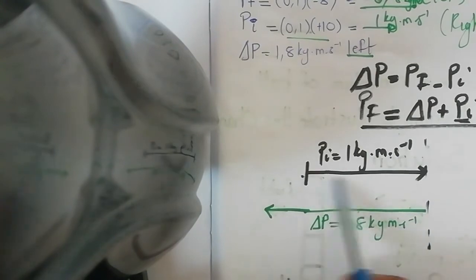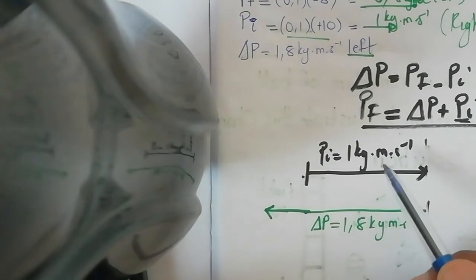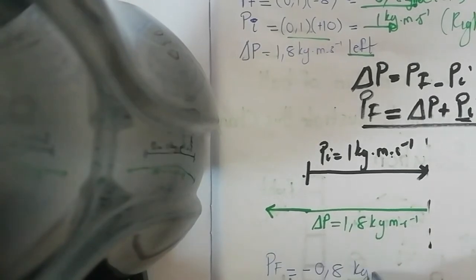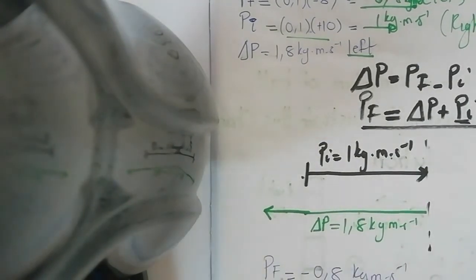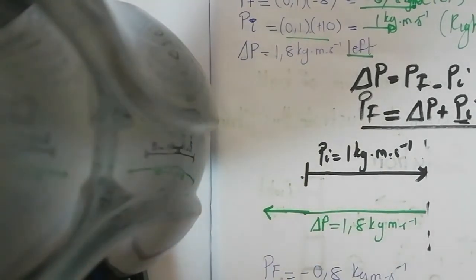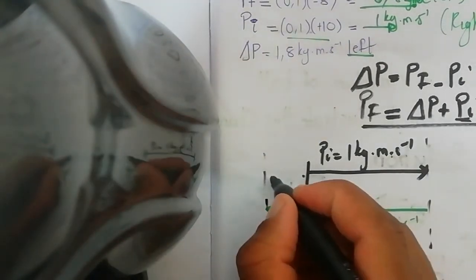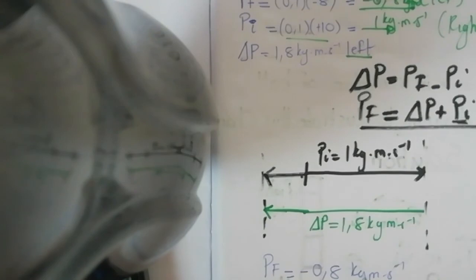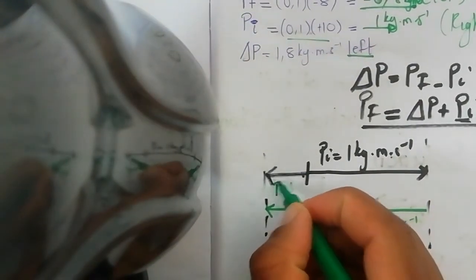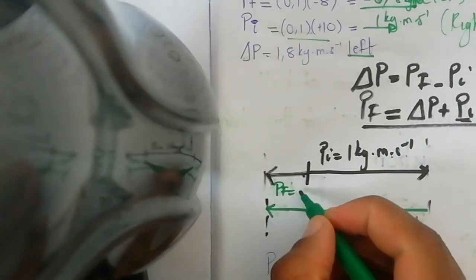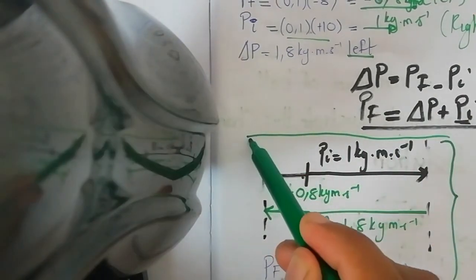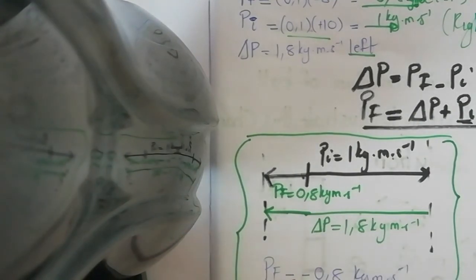Draw p-initial and change-in-p first, then draw p-final. p-final is negative 0.8 kg·m/s, going to the left. That completes the vector diagram. This is basically what question b was asking for. I hope this video makes sense.